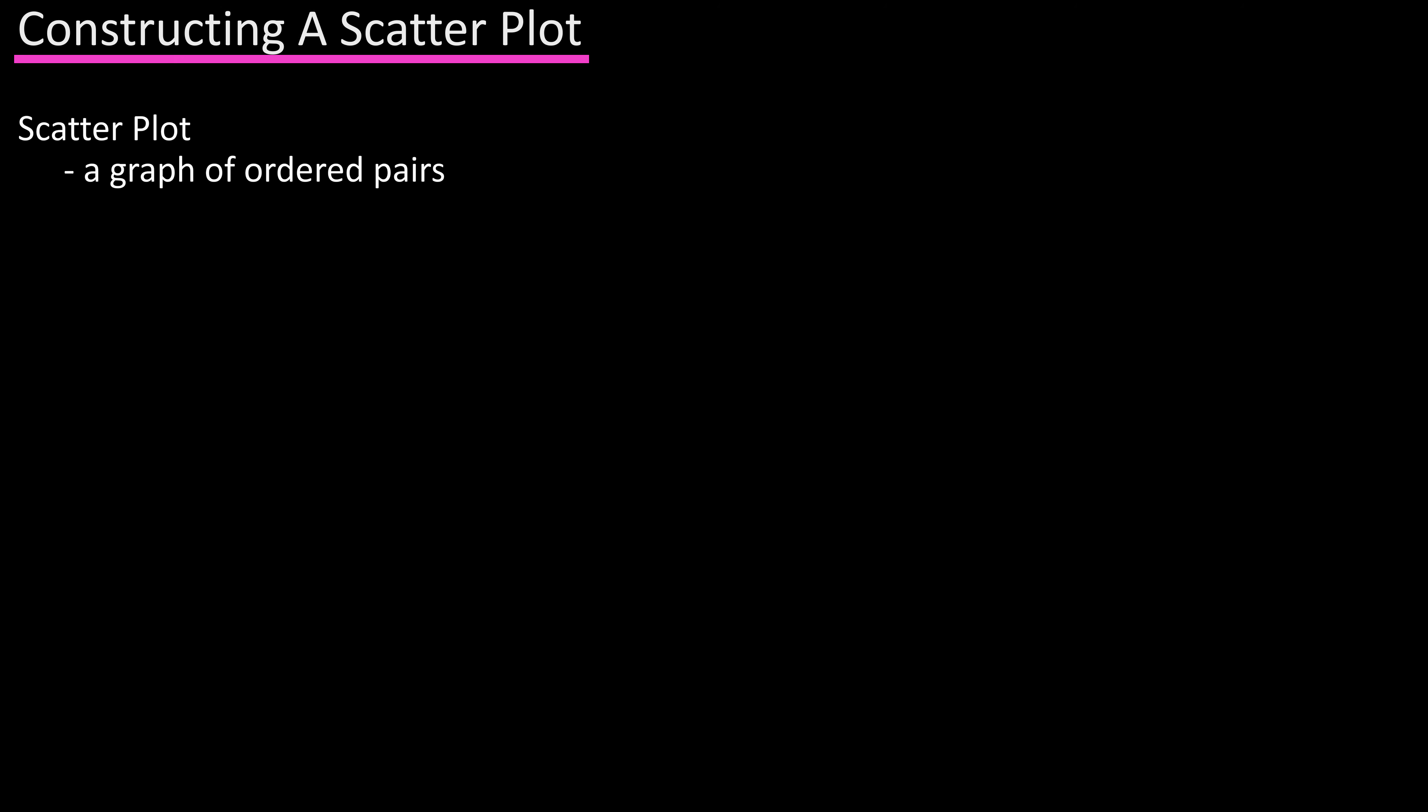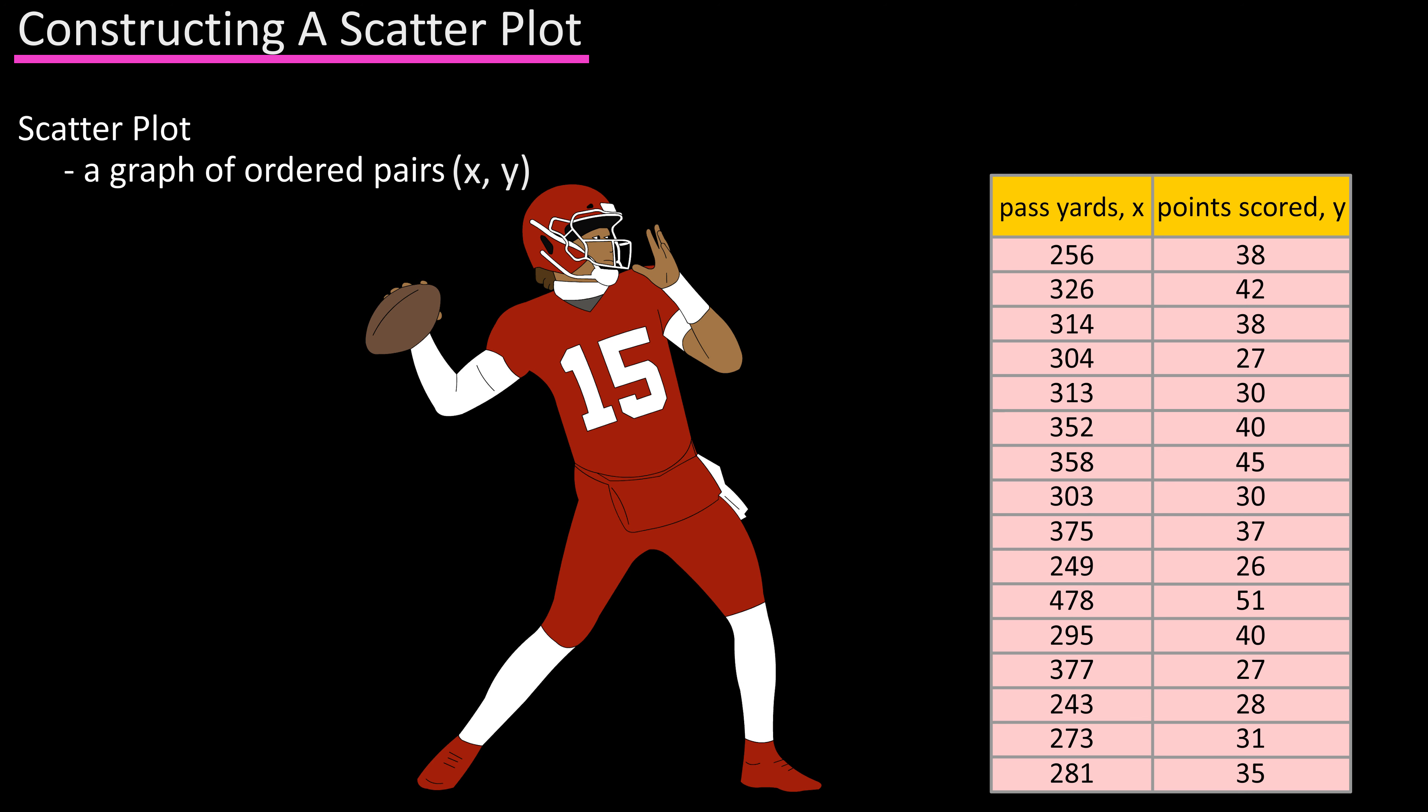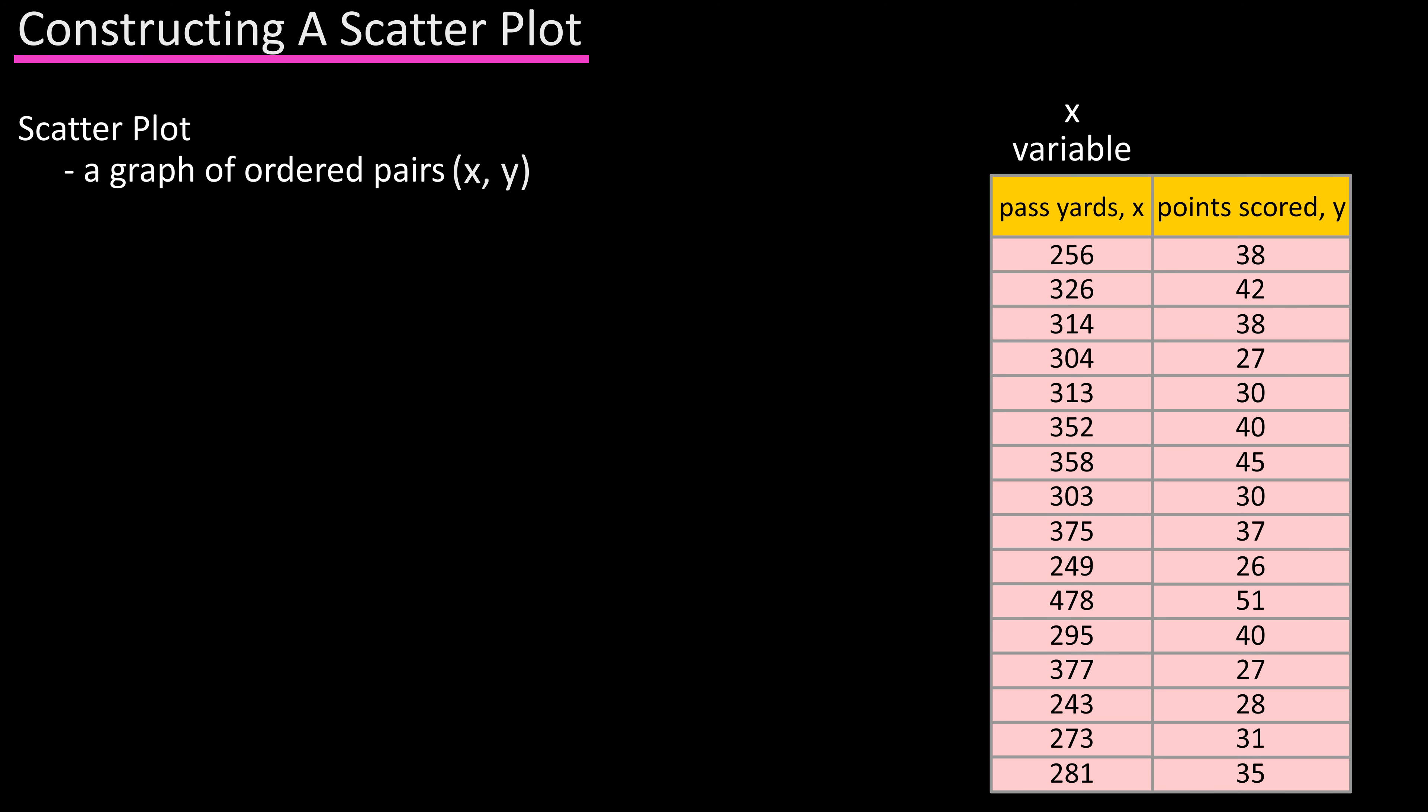A scatter plot is a graph of ordered pairs x and y. For instance, this table shows the number of passing yards each game for a quarterback in column one and the number of points his team scored in each of those games in column two. So passing yards is the x variable and points scored is the y variable, and these are ordered pairs of x and y, and we can create a scatter plot for this data.